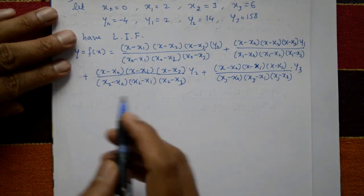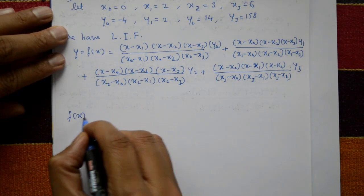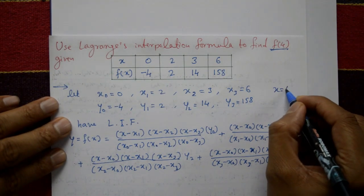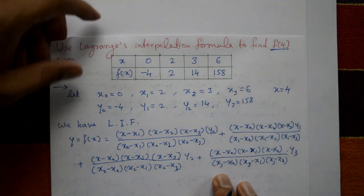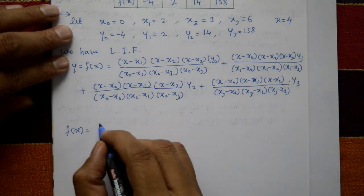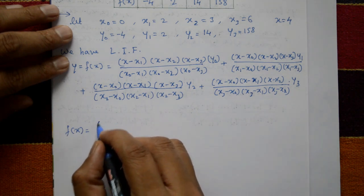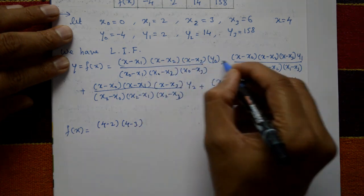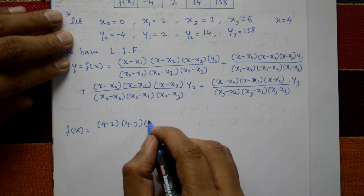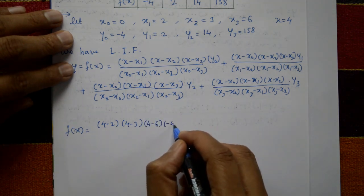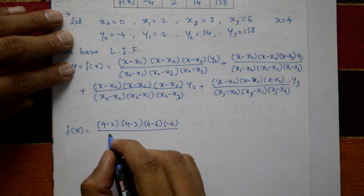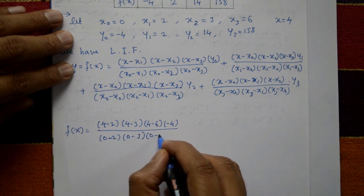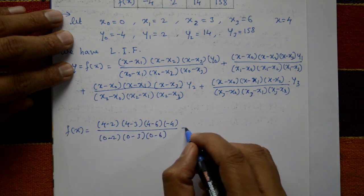Now substitute x = 4. The first term numerator is: (4 − 2)(4 − 3)(4 − 6) into y₀ = −4, divided by denominator (0 − 2)(0 − 3)(0 − 6).